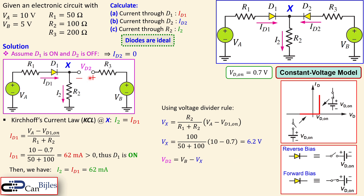Now we check VD2 with polarity from right to left: VD2 equals VB minus VX equals 5 minus 6.2 equals minus 1.2 volts. Since VD2 is less than zero, D2 is indeed reverse biased and off. This confirms that our second assumption — D1 on, D2 off — is correct.